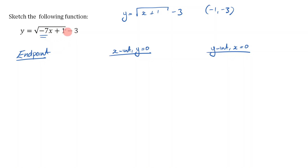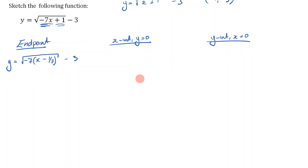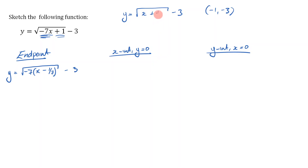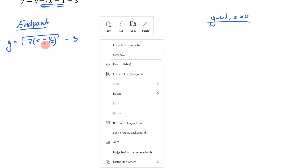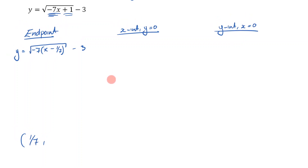There are two ways of figuring out the endpoint when you have a coefficient other than 1 for your x value. The first way is to factorize the inside of the square root. So we take out negative 7: the expression becomes negative 7 times (x minus 1/7), minus 3. You can verify this — negative 7 times x is negative 7x, and negative 7 times negative 1/7 is plus 1. Now, using the same principle as before, we swap the sign of negative 1/7, giving us x equals positive 1/7 for the endpoint.